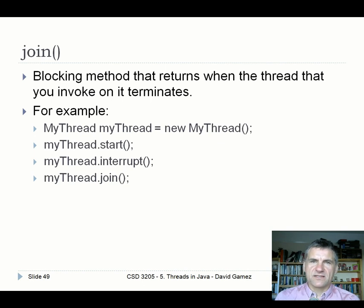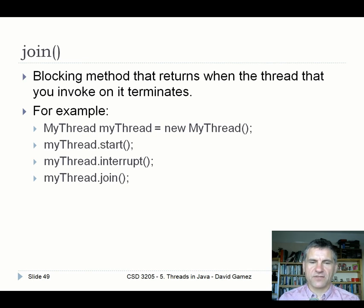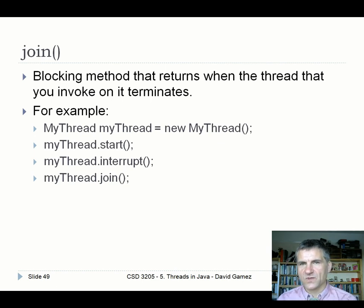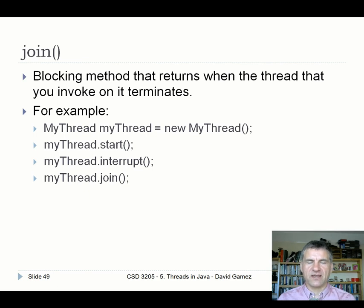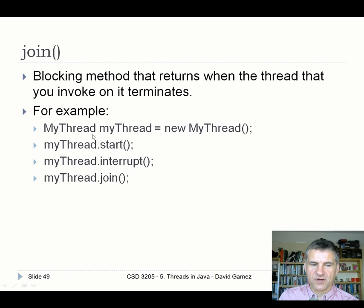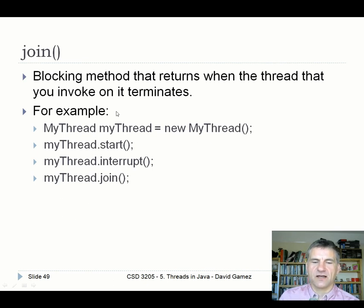When stopping threads it's sometimes useful to wait for them to complete before closing everything else, and the way to do that is with the join method. Calling join on a thread blocks the calling thread — if thread A calls join on thread B, thread A will block until thread B finishes execution. So: create myThread, start it, interrupt it, then call myThread.join — this means the code executing that instruction won't move on until myThread is actually finished.